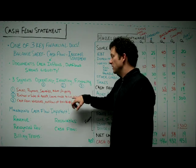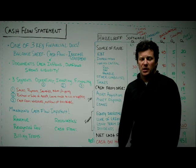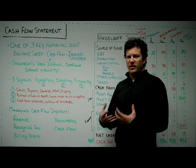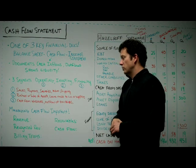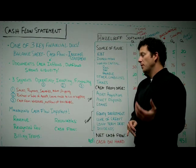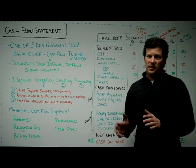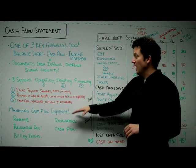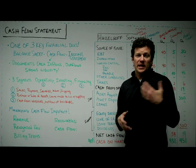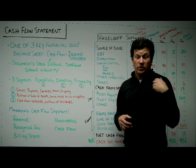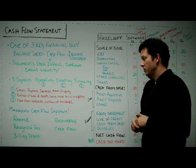Then there's the investing piece, which is purchase or sales of assets, loans made to customers or suppliers — investments you're making in your company, fixed assets, things like that. And then there's the financing piece: do you have cash coming in from investors, are you paying out dividends, do you have other financing activity happening inside the company? Those three taken together will give you a total net cash — either cash is going out or net cash is coming in.